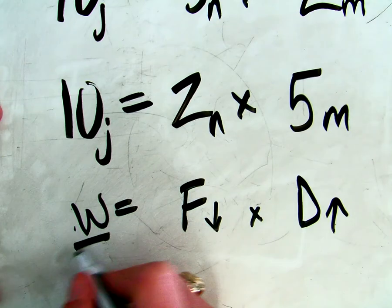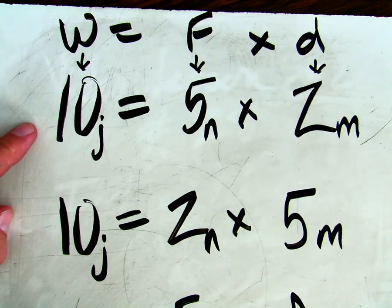So notice, this number never changes. The 10 stays the same, no matter if you use 5 times 2 or 2 times 5.